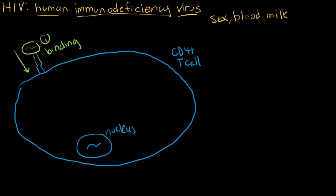That genetic material can then get into the cell, but it is different from human genetic material. In order for the cell to process the viral DNA and make new viral particles, the DNA has to be converted into something more similar to human DNA. That process is called reverse transcription. I'll draw that modified DNA in a different color.